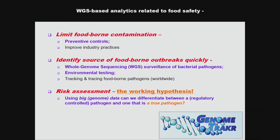If we bring this back to food safety, how can we harness this data? There are probably three reasons why we would want to apply whole genome sequencing: one is to prevent problems in the industrial environment; the second is to track infections around the world when outbreaks occur; and the third — which I want to focus on — is to use this data to refine risk assessment. We want to use big genome data to differentiate between a regulatory controlled pathogen such as Listeria monocytogenes, Salmonella, or pathogenic E. coli, and one of the same genera that is really not a true pathogen.